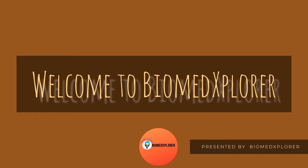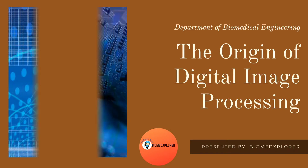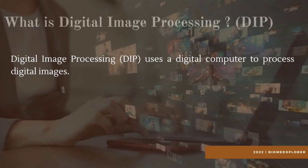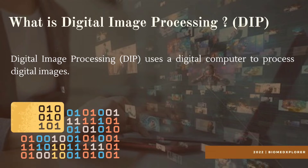In today's video we are going to learn about the origin of digital image processing. Digital image processing is nothing but processing any digital image through a particular algorithm with the use of digital computers. Image processing is done to enhance the features of an image or to obtain useful information from an image.